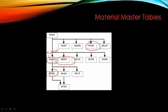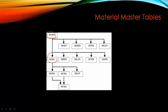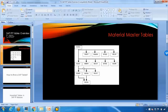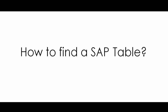The system maintains a link between all tables using keys. For example, MARA and MARC are linked by the material number as the common key. MAKT and MBEW also share the material number as a key. However, for tables like MARC and MARD, there are two keys: the material number and the plant. So plant-specific tables have two keys, not one.